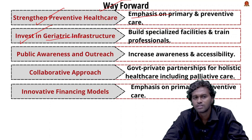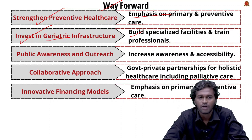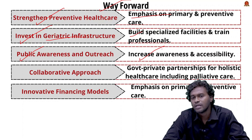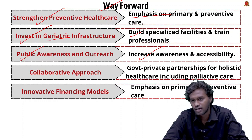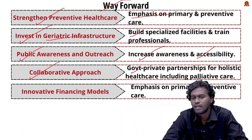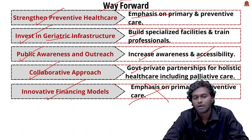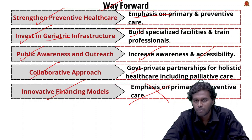The next step is investing in geriatric infrastructure — building specialized facilities for elderly populations and training geriatric professionals to address their unique needs. Then, public awareness and outreach to increase awareness about the scheme in rural and remote areas for better accessibility. A collaborative approach involving private sector participation in holistic healthcare including palliative care will reduce burden and improve quality. Finally, innovative financing models — such as public-private partnerships and tax incentives for healthcare — will ensure sustainability of PM-JAY.